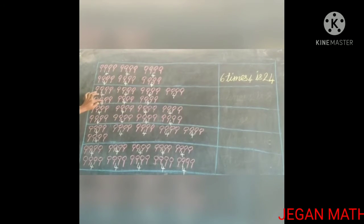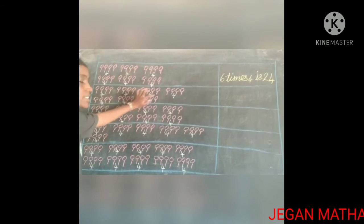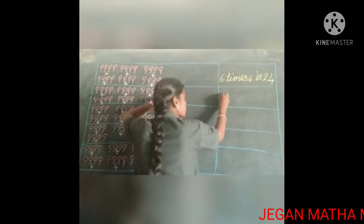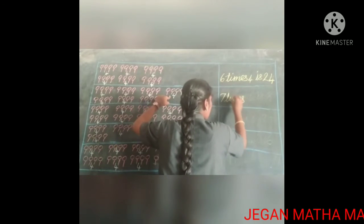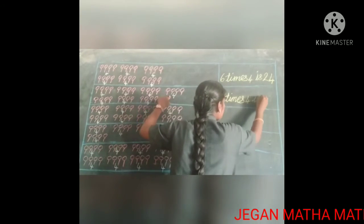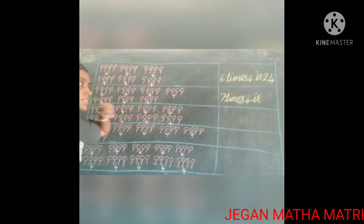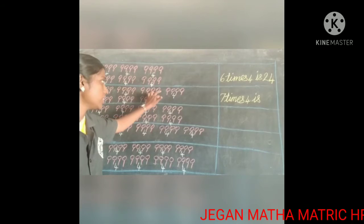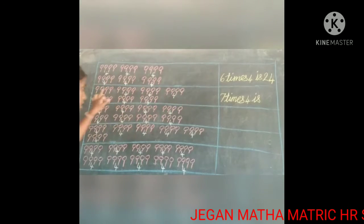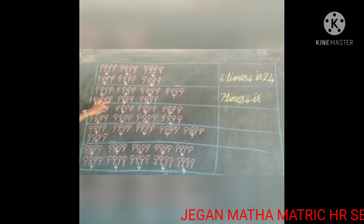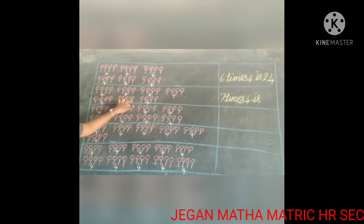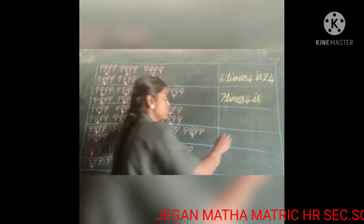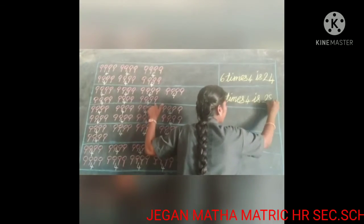Now look at the next box. Count how many 4's are there: 1, 2, 3, 4, 5, 6, 7 — seven times. So now 7 times 4 is... Count all the lollipops: 1, 2, 3, 4, 5, 6, 7, 8, 9, 10, 11, 12, 13, 14, 15, 16, 17, 18, 19, 20, 21, 22, 23, 24, 25, 26, 27, 28. So 7 times 4 is 28.